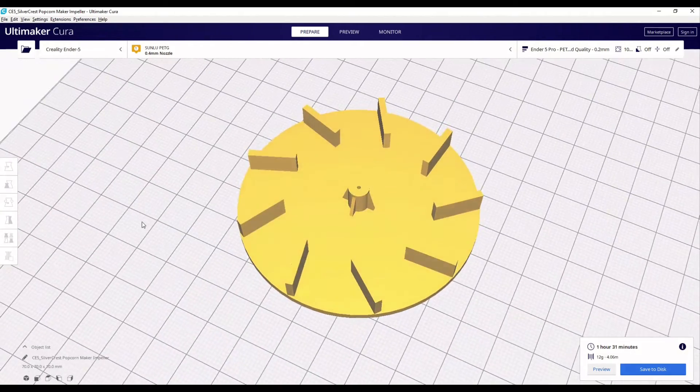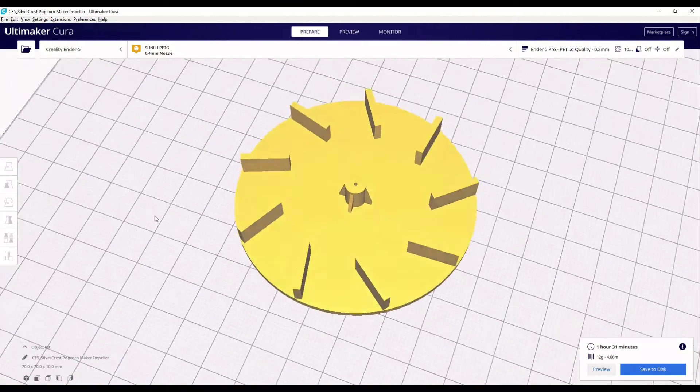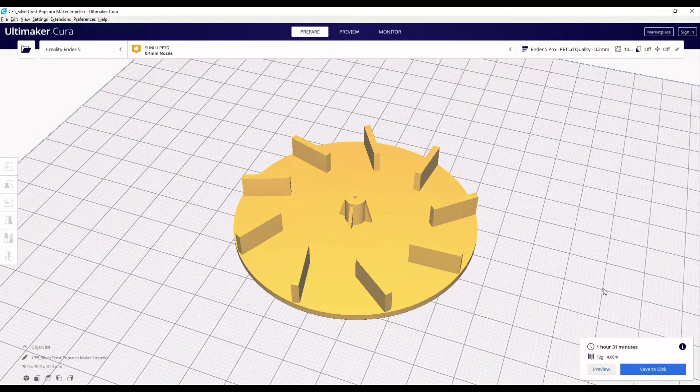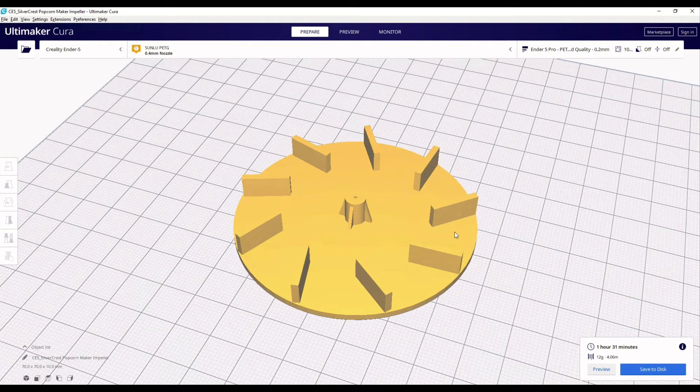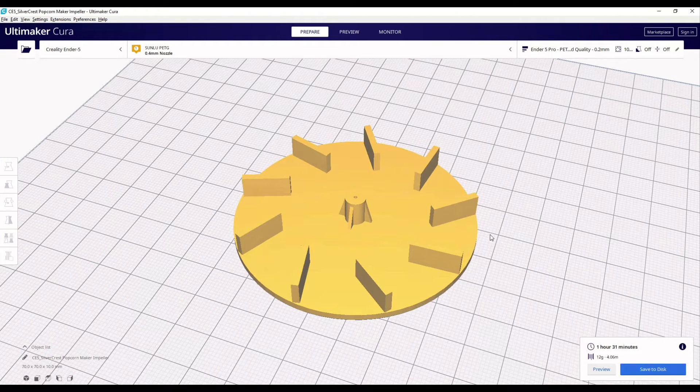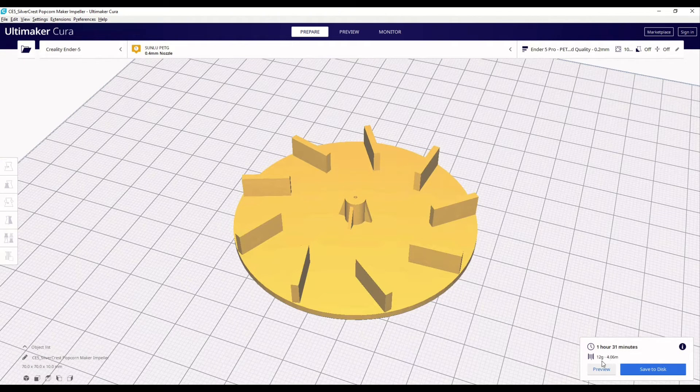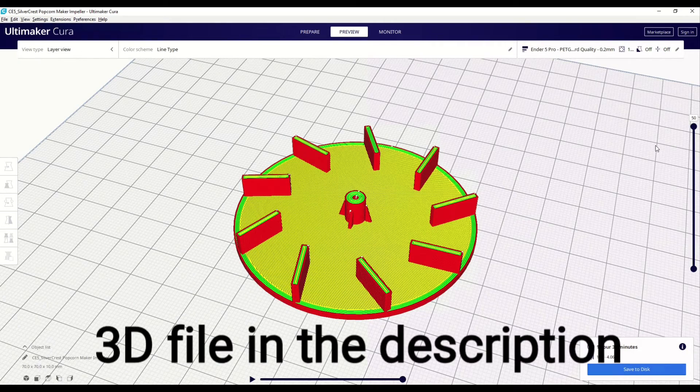I've decided to print this using PETG which should hopefully withstand the higher temperatures, and I'm going to do this at about 100% infill. As you can see, it's going to use about 12 grams and take about an hour and a half to make. So yeah, let's get this thing printed and see what it looks like.